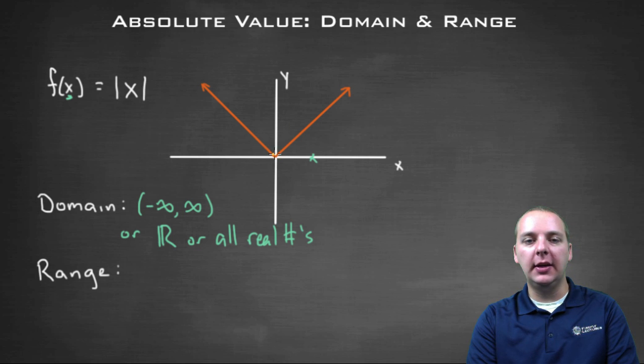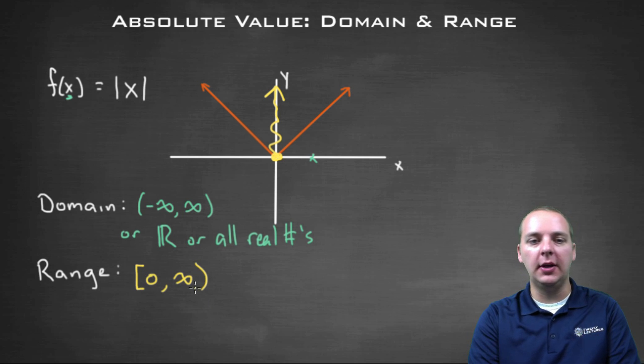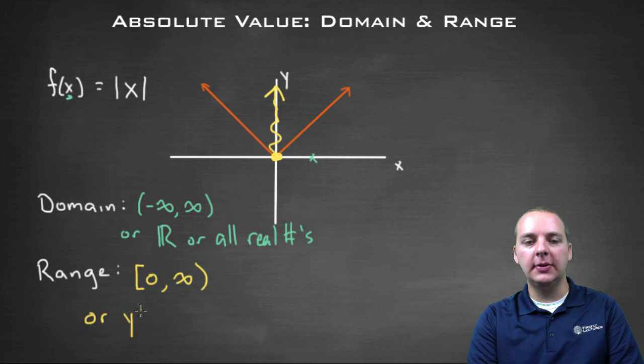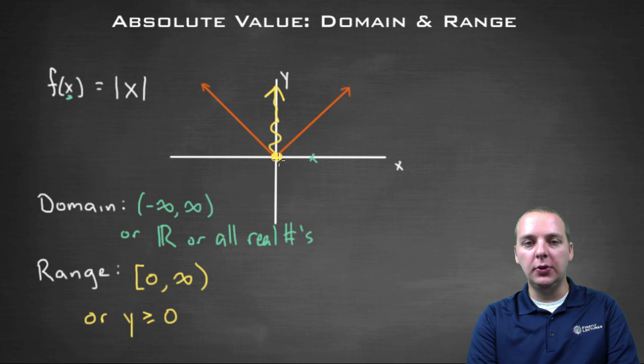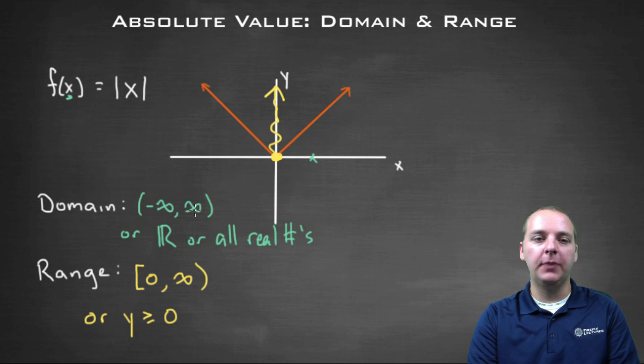So it looks like our y values start at zero and then go upwards from there. Our range would be either from zero to infinity if we wanted to use interval notation, or we could say all the y values that are greater than or equal to zero. Either way is fine. Notice I put a bracket around the zero because we actually do get this y value, but any time you have an infinity in interval notation you're going to put a parenthesis there.